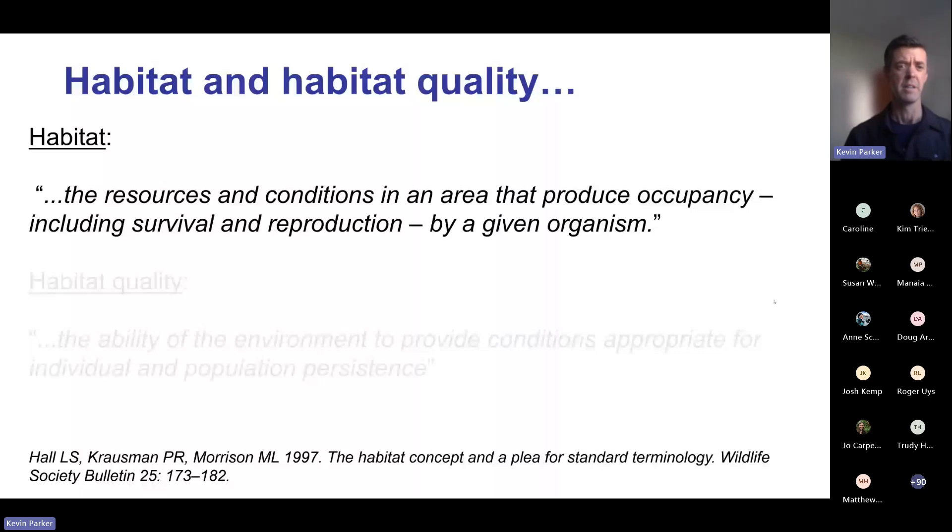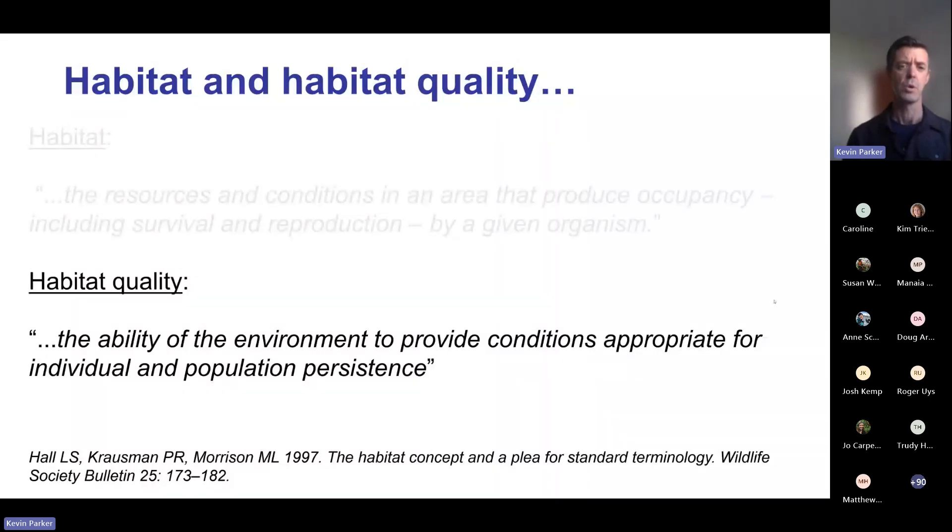The tricky thing with habitat quality is that it varies a lot - some places are better than others. We use Hall et al's definition: the ability of the environment to provide conditions appropriate for individual and population persistence. In places with really good habitat quality, animals survive better, have more babies, and populations grow fast and get big.